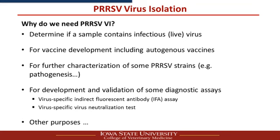Second, if you obtain a virus isolate, you can use it for vaccine production, including autogenous vaccine production. You can also use the virus isolate to further characterize virulence and pathogenesis, and develop specific assays such as virus strain-specific antibody assays and virus strain-specific neutralization tests.